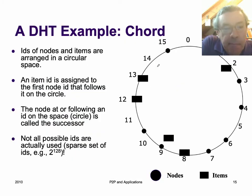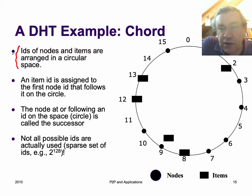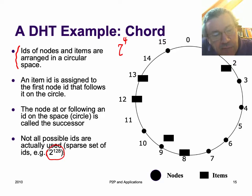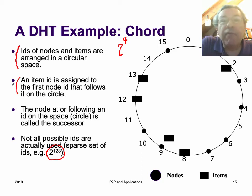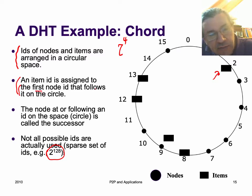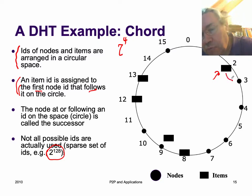A famous example of a DHT is a system called Chord. This was the first DHT, in the early 2000s. The nodes and the items have common IDs arranged in a circular space. In this example, we have 2 to the 4, so 16 possible IDs. In a real system we'd have much more — for example, 128 bits. An item with ID 2 but no node at 2 is assigned to the first node ID that follows it on the circle, so it will actually be stored on node 3.